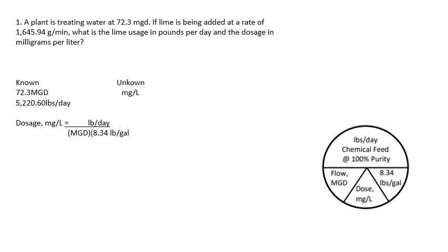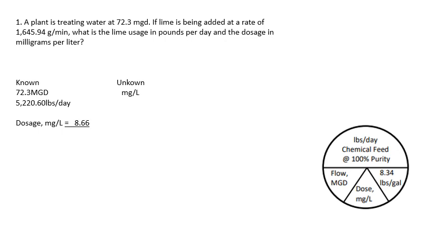Now that goes on our known column, and we can solve for dosage because we know the pounds per day. We have the million gallons and we're solving for dosage: 5,220.6 pounds per day divided by 72.3 MGD times 8.34 pounds per gallon. Make sure you do the math on the bottom first — it's top divided by bottom — otherwise you get the wrong answer. Your answer is 8.66 milligrams per liter.